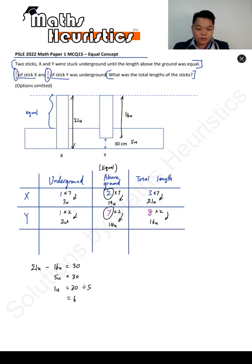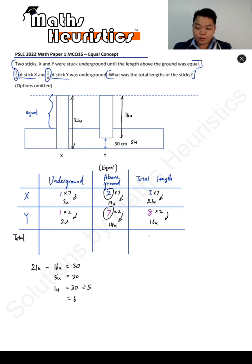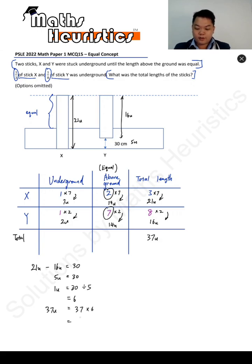So one unit will represent 30 divided by five, which gives you six. If one unit represents six, the objective here is to find the total length of both sticks, which is 37 units. 37 times six gives us a total length of 222 cm.